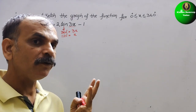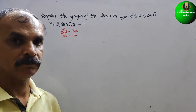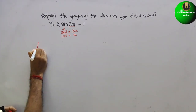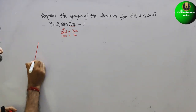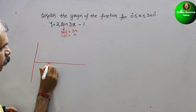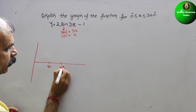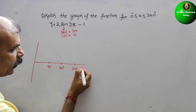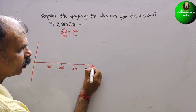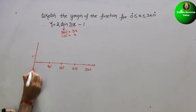First, we will draw the normal sine wave for reference. The x-axis is marked at 90°, 180°, 270°, and 360°. On the y-axis, the amplitude goes up to 1 and down to minus 1.